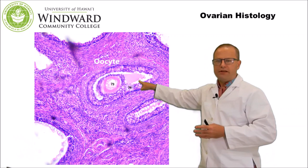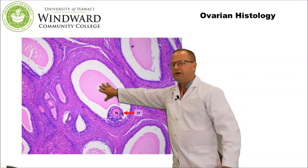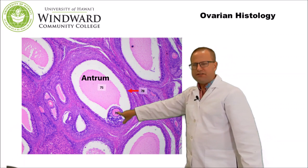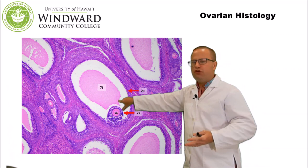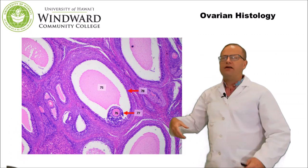A large graafian or vesicular follicle is a very late-stage secondary follicle, identifiable by its very large fluid-filled antrum indicating it's nearly ready to be ovulated. The oocyte itself makes up only a small proportion of the follicle, surrounded by the cumulus oophorus, and the whole structure is enclosed in a large, well-developed ring of granulosa and thecal cells that produce estrogen and will later produce progesterone.